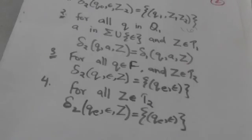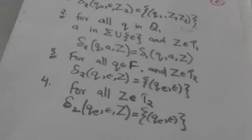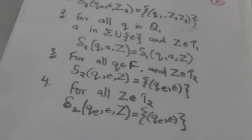So after reading the string W, M2 will empty its stack, meaning the string W will be accepted by pushdown automata M2 by empty stack. In this way, the language L which is accepted by M1 by final state will be accepted by M2 by empty stack. Thank you very much.